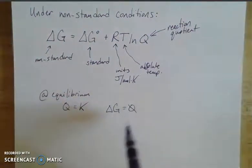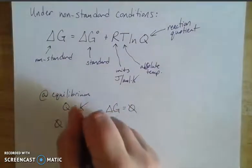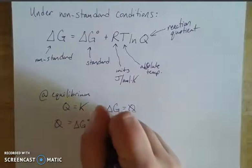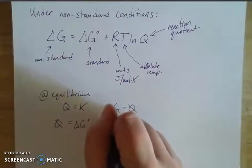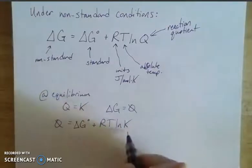So if this is under my non-standard condition, but I'm at equilibrium, then that means if I plug in these values, I end up with 0 is equal to my delta G at standard conditions plus my R T. And then now I have the LN of K, my equilibrium constant. When I have K here with no subscript, that's the thermodynamic equilibrium constant.